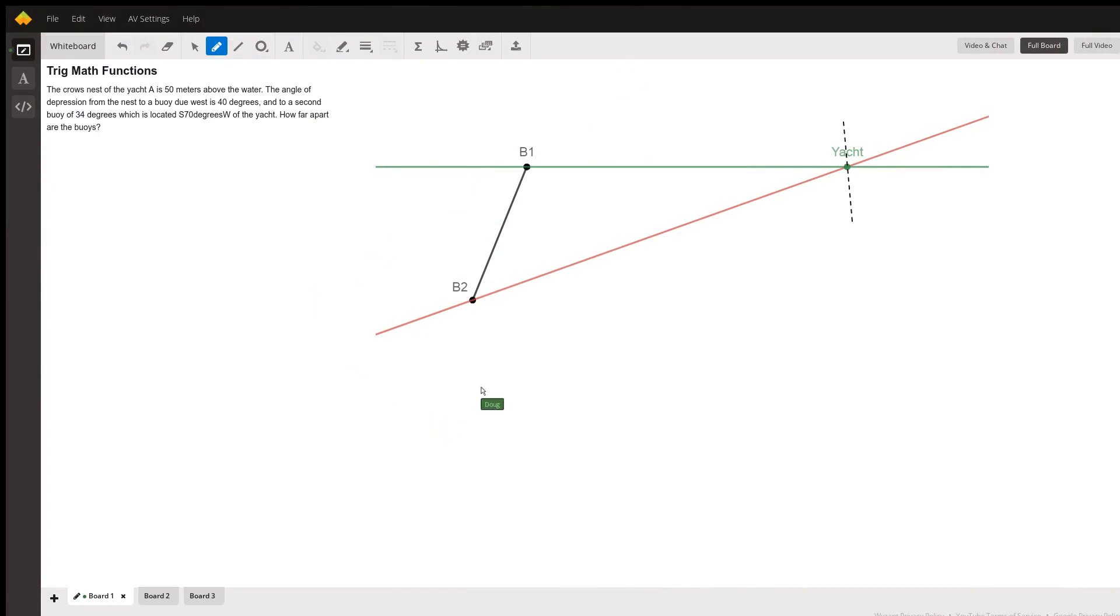Okay, this is how I interpret this problem. Imagine you're in a helicopter way above where the yacht is, like 500 feet instead of 50 feet, and you're looking down at the water. This is what you see.